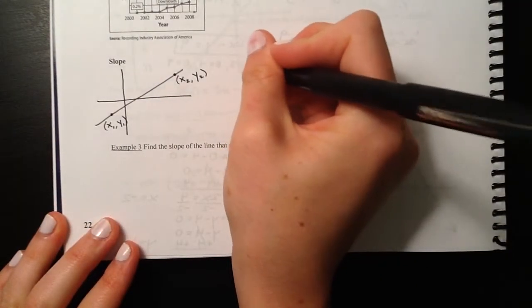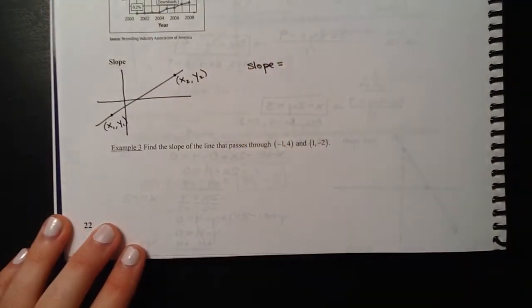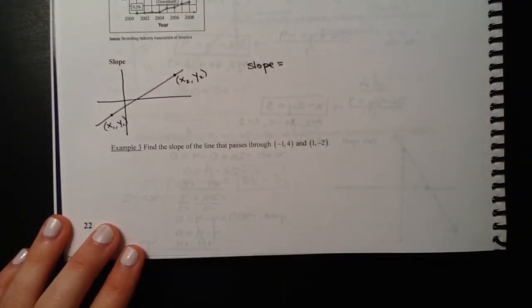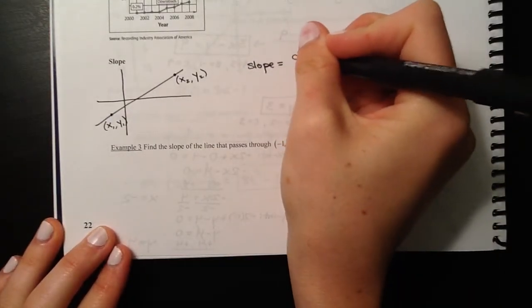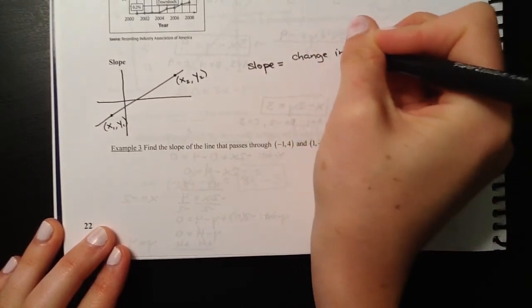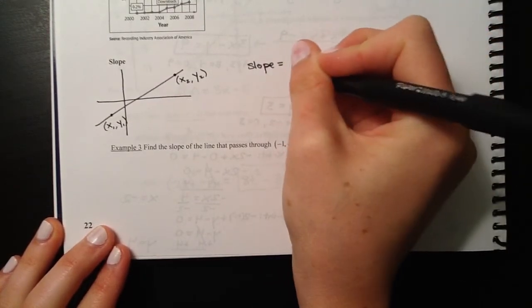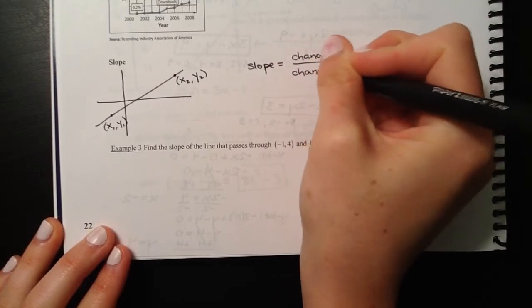If you're trying to find the slope, we've got a bunch of different ways we can define it. We can define it as change in y over change in x, like we did in the previous set of notes.